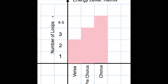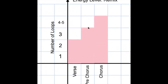Knowing that I need different energy levels for each section, I've created an energy level chart. In any verse you're only going to have one to two loops — one is the vocal track and you add one more. At the pre-chorus, you'll have three loops. During the chorus you can have four to five loops. Remember, one loop is already in for you, so you're not adding as much as in Project Two.